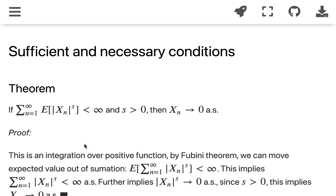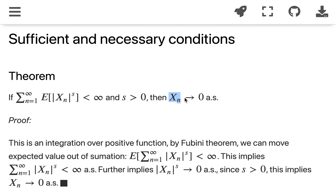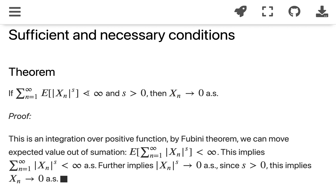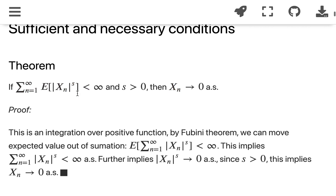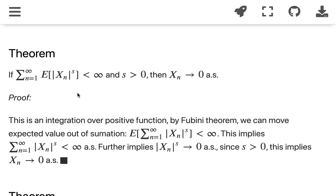We're going to look at some theorems about sufficient conditions — or sufficient and necessary conditions — for almost sure convergence of a random variable x_n to 0. The first one: if the summation of the expected value of |x_n|^s is finite for all s greater than 0 — it doesn't have to be an integer, it could be any real number greater than 0 — then x_n converges to 0 almost surely.